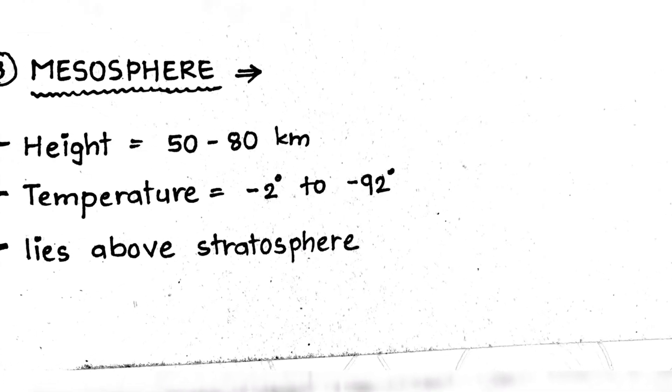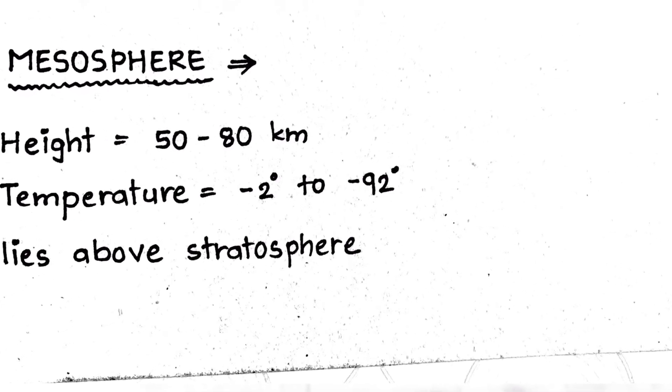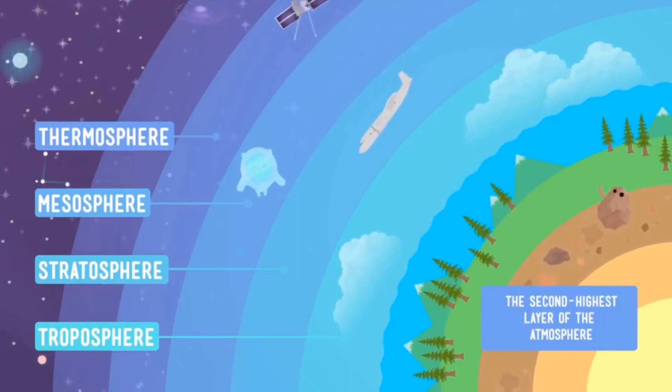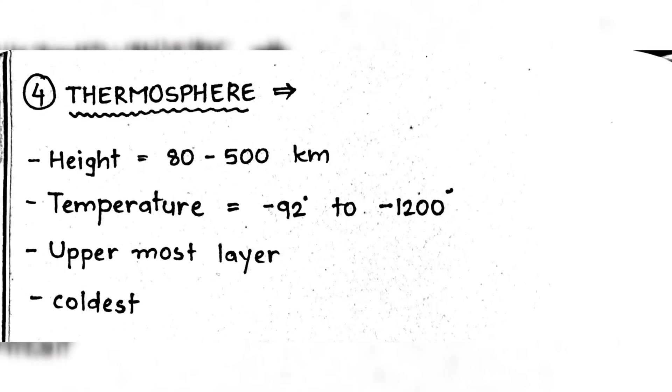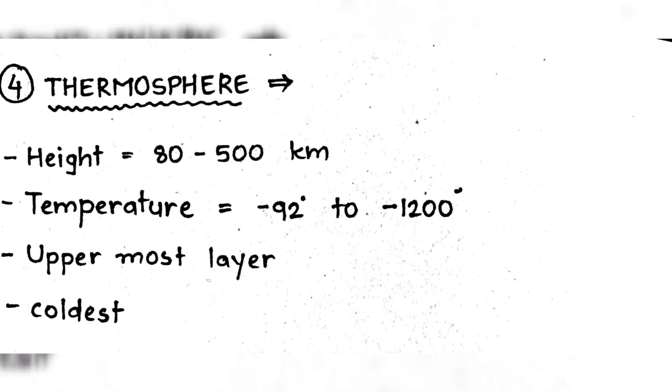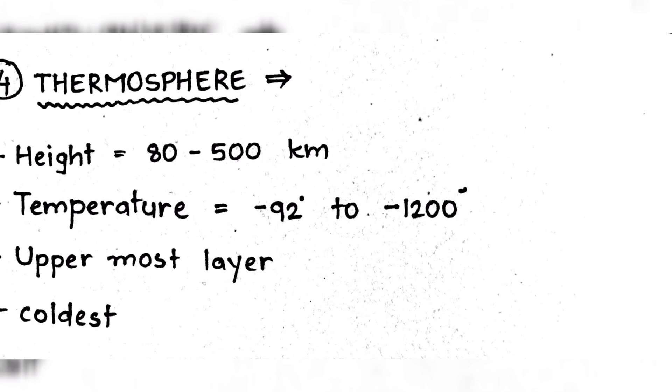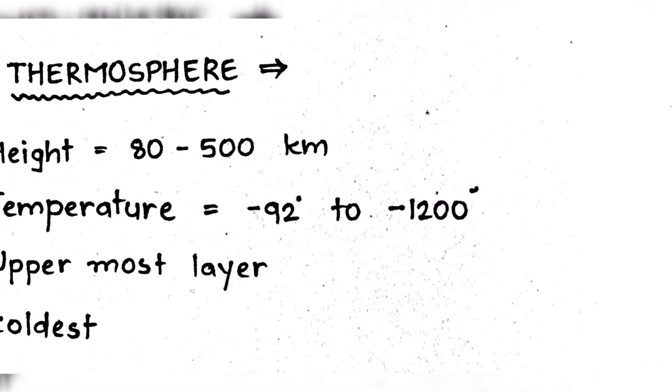And the fourth layer is thermosphere. It is the uppermost layer. Within this layer many satellites circle the Earth because of thin air and proximity to the sun. Temperature in the thermosphere increases and decreases rapidly. It is in the range of 80 to 500 kilometers.